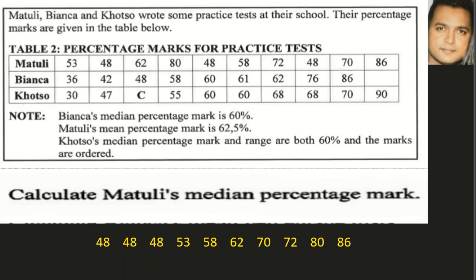We are given test scores by three pupils — Matuli, Bianca, and Kotso — and we are asked to calculate Matuli's median percentage mark. The steps are: first, arrange the marks from highest to lowest. Matuli has 10 marks, and since there is an even number of marks, we need to take both middle numbers and divide by two.